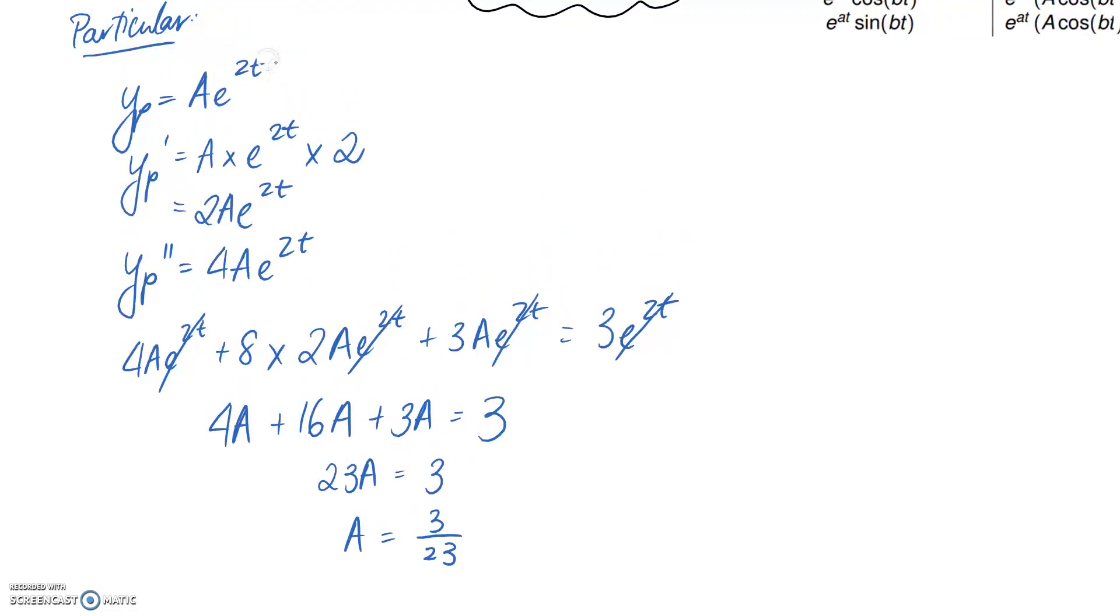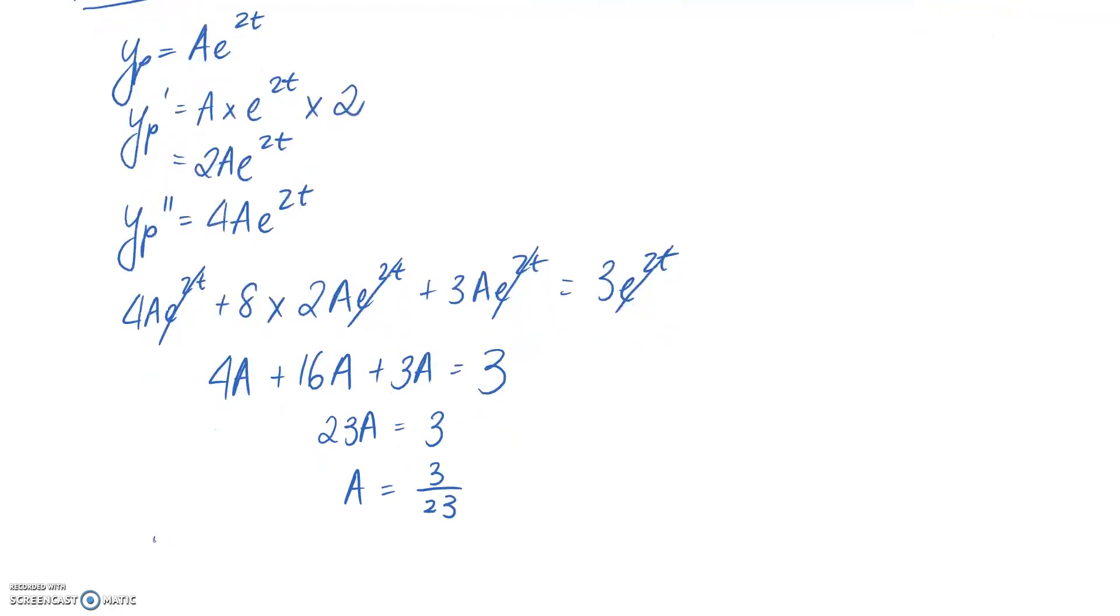So we can now write out our particular solution, including that A constant. So that means that yp is going to equal 3 on 23, e to the 2t.